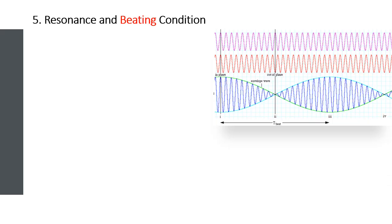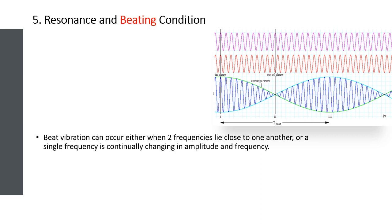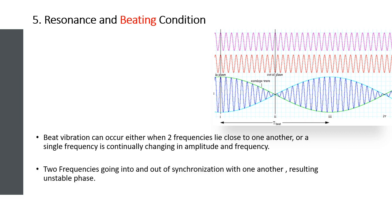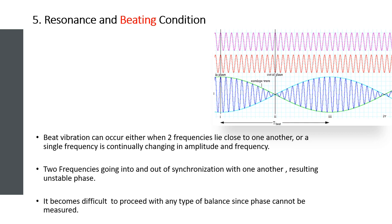The beating condition occurs when either two frequencies lie close to one another or a single frequency is continuously changing in amplitude and frequency. This commonly happens with machines sharing a common base or in close proximity and operating at similar speeds. The two frequencies go in and out of synchronization — when in phase, vibrations amplify; when out of phase, vibrations diminish. This results in unstable phase readings, making the balancing program very difficult.